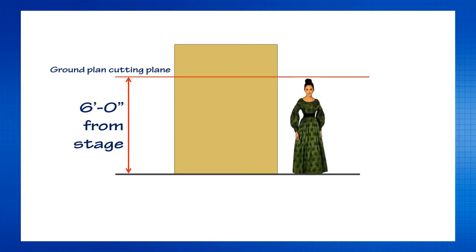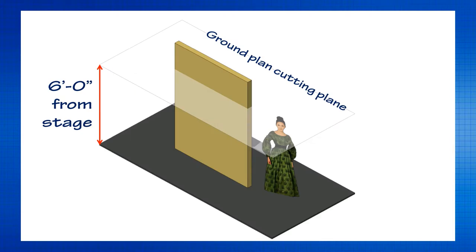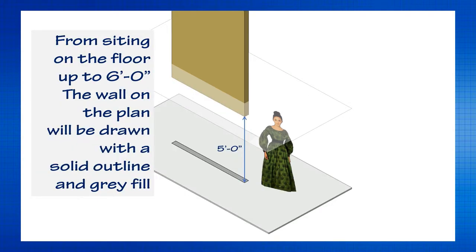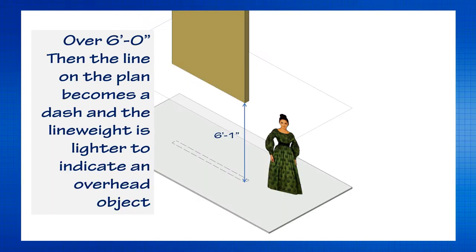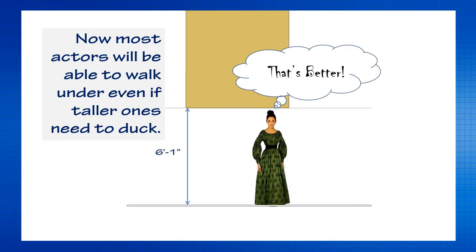So if we had a flat on stage, we'd draw a line six feet from the stage floor. Anything sitting on the stage floor all the way up until six feet is drawn with a thick line and a gray fill — a solid line. So if a flat is flying five feet up in the air, it's still drawn as a solid line because an actor can't walk through there — they'd have to duck. But if we raise it above six feet, we change the line to a dashed, lighter-weight line and take the fill away. That's just showing us where something overhead is in space, and now an average-sized actor can walk right underneath it.